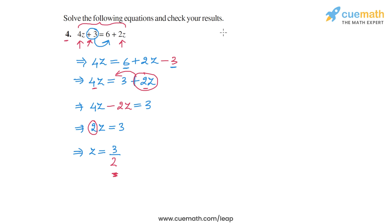Now we need to check whether this solution is correct or not. And to do that, we just need to substitute this value of z into the equation. So we have 4z plus 3 on the left hand side. So 4 times 3 by 2 plus 3 on the left hand side. And on the right hand side, we have 6 plus 2z, which is 6 plus 2 times 3 by 2.